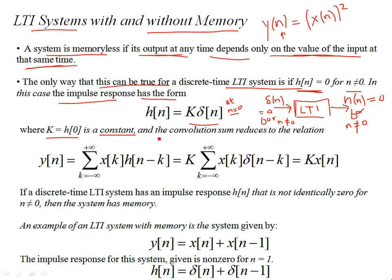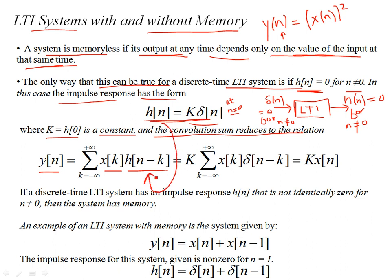At n=0, h[0] is simply k, which is a constant. So the convolution sum reduces accordingly. For a discrete-time LTI system, the output can always be computed in terms of the shifted and flipped impulse response via the convolution sum. If the system is memoryless, we substitute h[n] = k·δ[n] into the convolution sum. Taking k outside the summation, the sum becomes the sum of x[k]·δ[n-k], which yields y[n] = k·x[n].